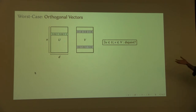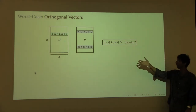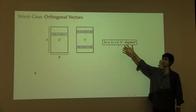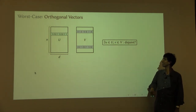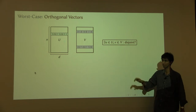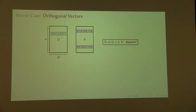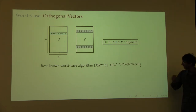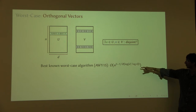How would you solve this? One trivial algorithm is to go through all possible pairs of vectors and check if they're disjoint. That takes n-squared times D time — n-squared pairs of vectors and D time to check each. The trivial algorithm takes n-squared times D time. The best algorithm known so far is from a couple of years ago by Abbott, Williams and Yu, and it works in slightly better than n-squared time, but not that much better.